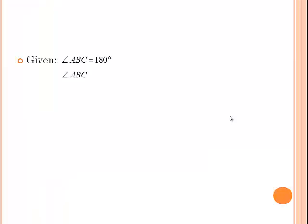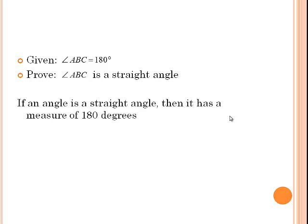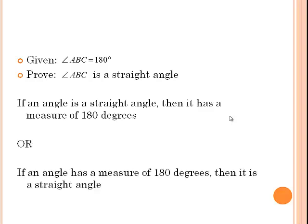For this first example, I give you that angle ABC is 180 degrees, and I want you to prove that angle ABC is a straight angle. If we think back to the various reasons we wrote down in our notes, we have two different reasons that relate to straight angles. The first one is: if an angle is a straight angle, then it has a measure of 180 degrees. Or: if an angle has a measure of 180 degrees, then it is a straight angle.